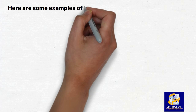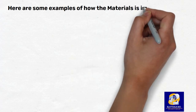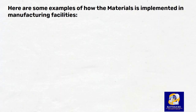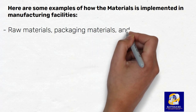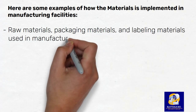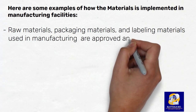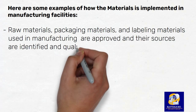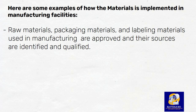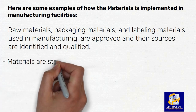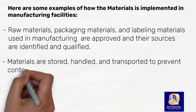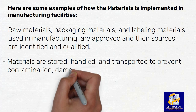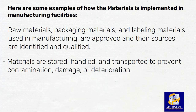Here are some examples of how materials management is implemented in manufacturing facilities. Raw materials, packaging materials, and labeling materials used in manufacturing are approved and their sources are identified and qualified. Materials are stored, handled, and transported to prevent contamination, damage, or deterioration.